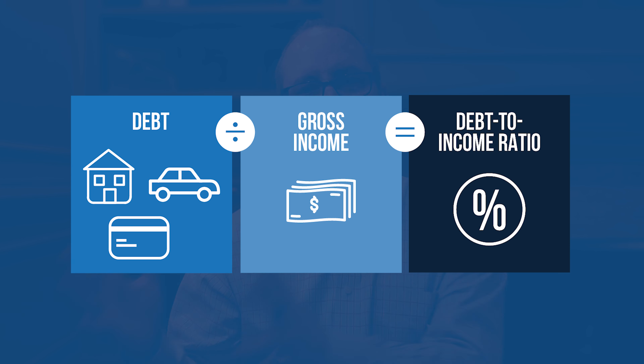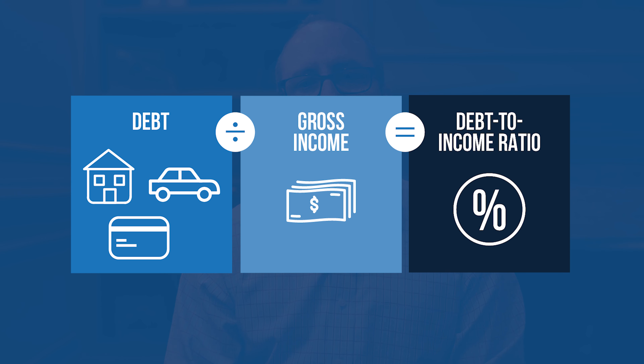How you calculate your debt-to-income ratio is you take all of your credit-reportable debts, which will be credit card minimum monthly payments, any mortgage payments, auto loan payments, and student loan payments — anything that is reported to the credit bureau every month. You take all of those debts and add them up.